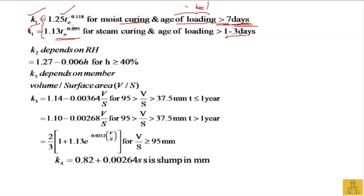k2 accounts for the relative humidity h, where h must be greater than or equal to 40%. k3 takes into account the volume-to-surface-area ratio V/S. If V/S is less than 95 mm and greater than 37.5 mm, specific equations apply.